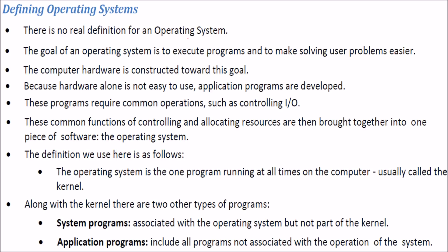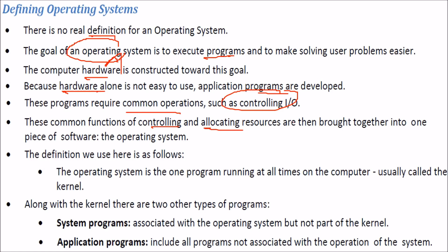How do we define the operating system? The best and simplest definition is: it is an interface between the user and the hardware. There is no single universal definition. The goal of the OS is to execute programs and solve user purposes. Common functions like controlling I/O and allocating resources, when brought together in one piece of software, are what we call the OS.